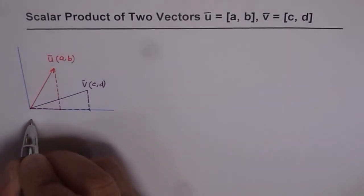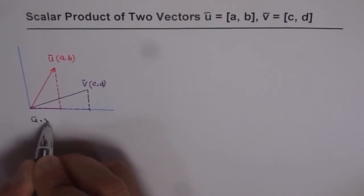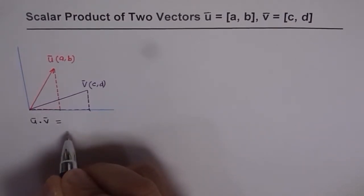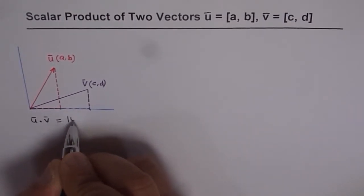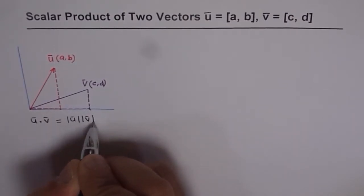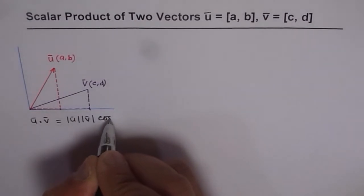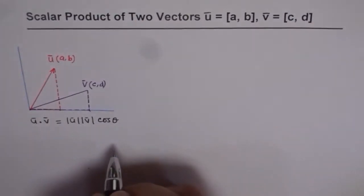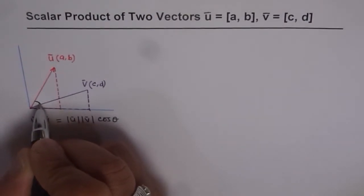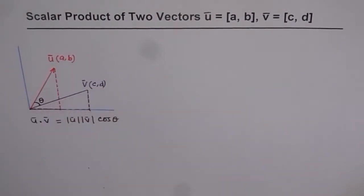Normally, if we ask what is U dot V, we can use a formula for geometric vectors: magnitude of U times magnitude of V times cosine of theta, where theta is the angle between them. So that is how we find U dot V using the geometric formula.